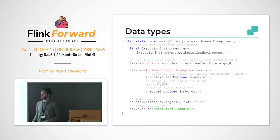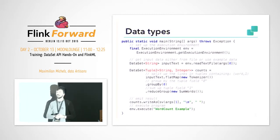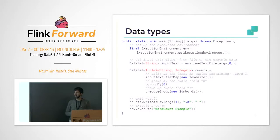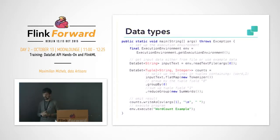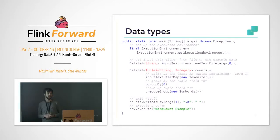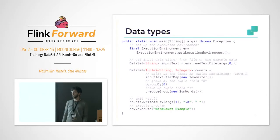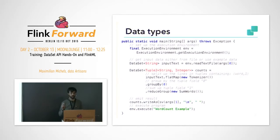You get as a result a DataSet of type String. All the data you process with Flink is typed, so Flink knows how to handle the data and also ensures that you perform type-compatible transformations when you write your program. Here we have first the String DataSet and later a DataSet of Tuple2, where you have both String and Integer as a record.